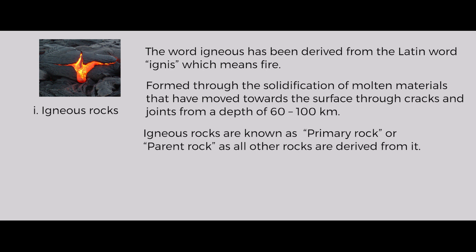Igneous rocks are also called primary rocks because they are first formed on the surface by solidification of molten lava. They are also called parent rocks because they are the source for the other two rock types — the other two rocks are formed from igneous rocks. We can say that igneous rocks are also called fiery rocks.